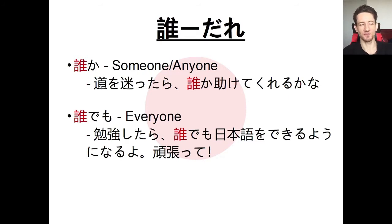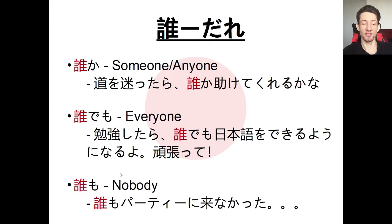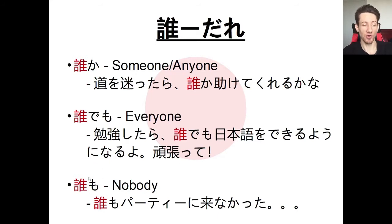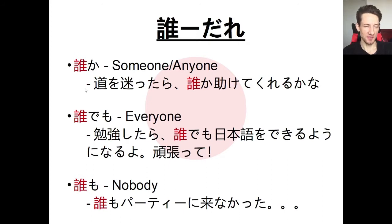Be careful not to confuse dare ka and dare demo. Finally, we have dare mo — nobody. Dare mo party ni konakatta — nobody came to my party. You can add mo to WH-words: itsu mo (always), nanimo (nothing), doko mo (wherever). With dare mo, you need a negative verb — you can't say dare mo party ni kita; you need konakatta — nobody came. So to summarize: dare ka (someone), dare demo (anyone/everyone), dare mo (nobody).